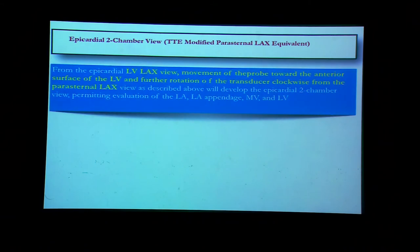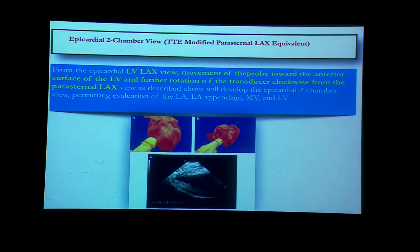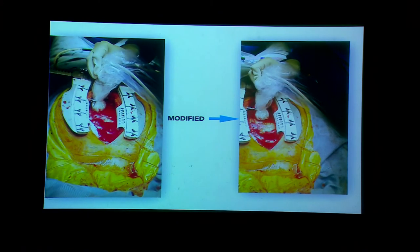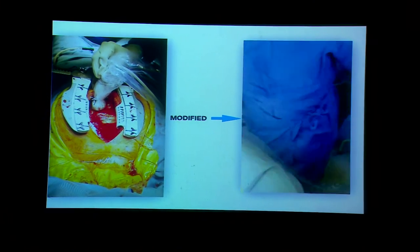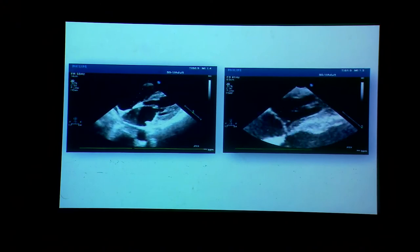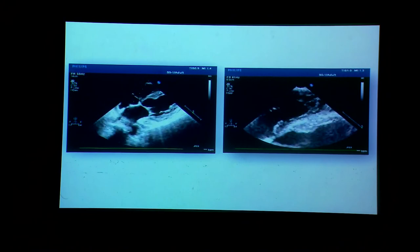From the same position, instead of going further towards the left ventricle, we go more towards the right ventricle and perform clockwise rotation to obtain an excellent four-chamber view. In this view we can see the mitral valve, tricuspid valve, and by zooming we can see the perimembranous septum, interventricular septal ruptures, and everything very well.